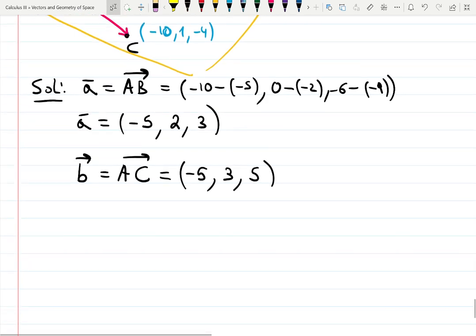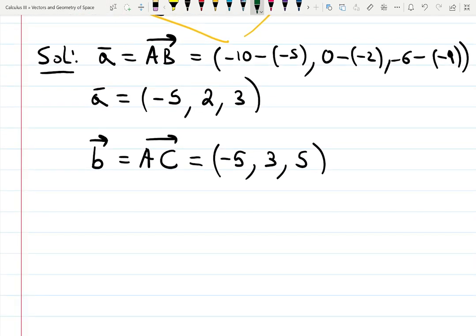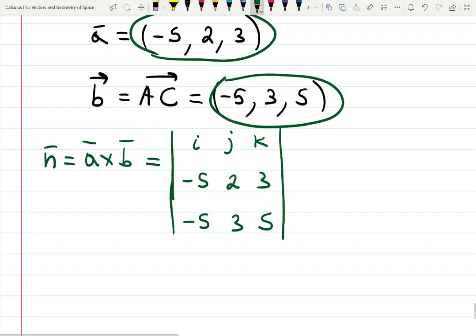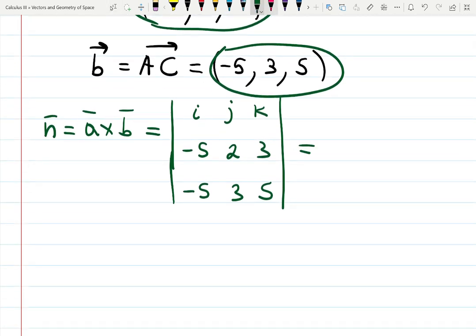Okay, now the hard work starts here. N is cross product of A and B. That will be determinant, if you remember, I, J, K. Write them down in order. Minus 5, 2 and 3. Minus 5, 3 and 5. Now remember the sign. Plus, minus, plus.